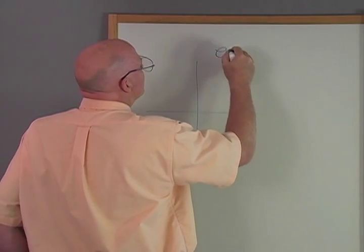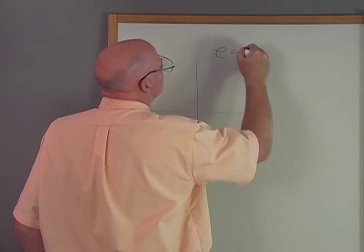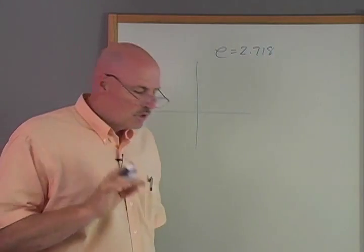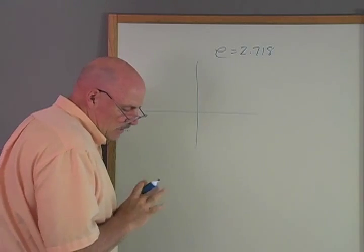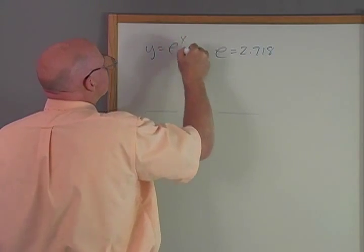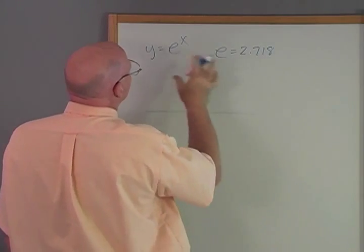We know that E is approximately 2.718. And that's the natural logarithm. So we're going to be doing stuff like Y equals E to the X. So let's go ahead and graph this.